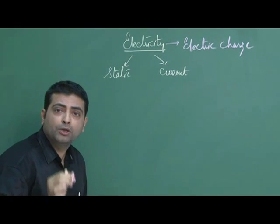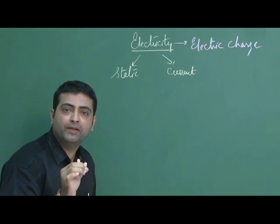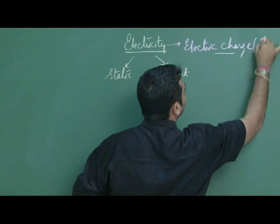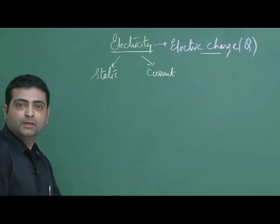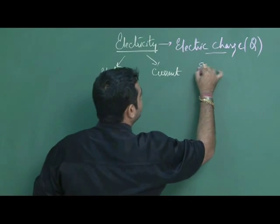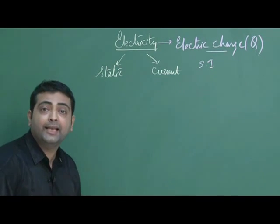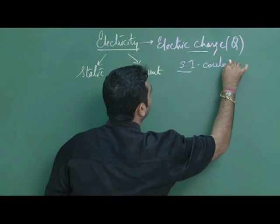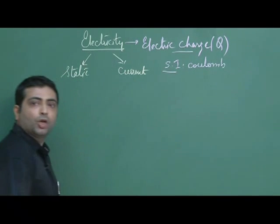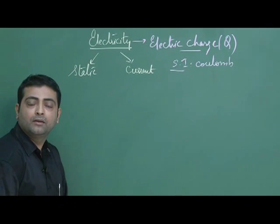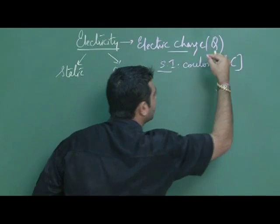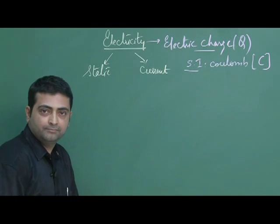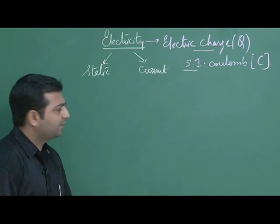Every physical quantity in physics has to be abbreviated by a symbol. Electric charge is symbolized by the variable capital Q. Its SI unit — System Internationally Accepted Unit — is called Coulomb, spelled C-O-U-L-O-M-B, abbreviated as capital C, named after physicist Charles Augustin Coulomb. So electric charge: capital Q, SI unit Coulomb.